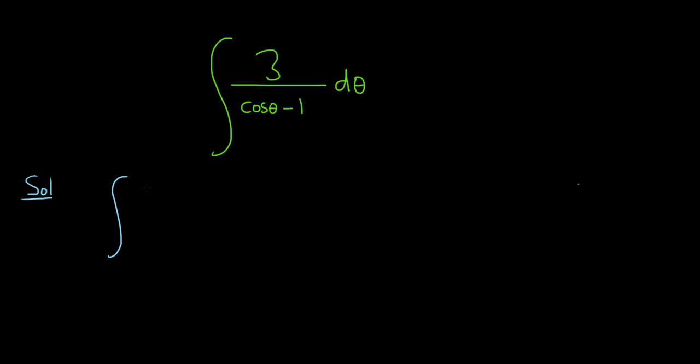So we have 3 over cosine theta minus 1. And what you do is you multiply by something that will make the bottom the difference of squares. So like this, cosine theta plus 1 over cosine theta plus 1. Notice we're basically multiplying by 1, because this basically cancels with itself and you just get 1.